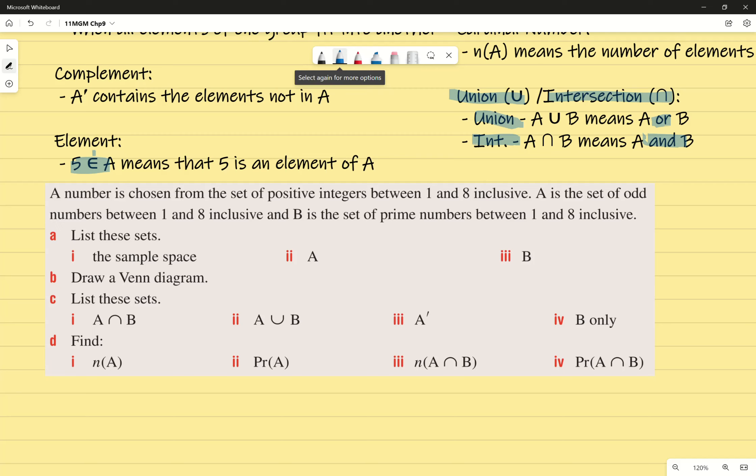A number is chosen from the set of positive integers between one and eight inclusive. Inclusive meaning we're including eight as well. A is a set of odd numbers between one and eight. And B is a set of prime numbers between one and eight inclusive. List the sets. So the sample space is just one, two, three, four, five, six, seven, eight. Just don't forget your squiggly brackets. Now we list the sets of A. So what I'm going to do is I'm going to write A equals and same thing with the squiggly brackets. So all the numbers in A is a set of odd numbers between one and eight. Of course, we know that to be one, three, five, and seven.